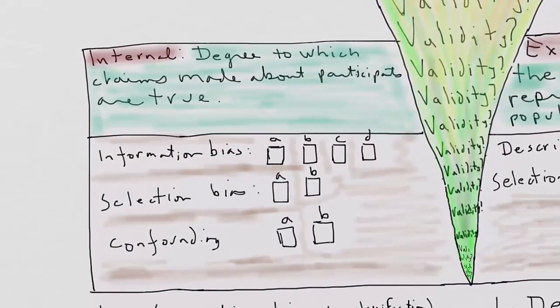Internal validity is the degree to which claims made about participants are true. And what I've done below that is I've broken up internal validity into three separate sections: information bias, selection bias, and confounding. We'll take a closer look at each of the subsets of information bias, selection bias, and confounding right now.